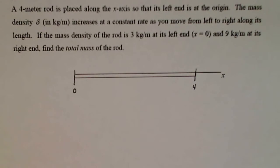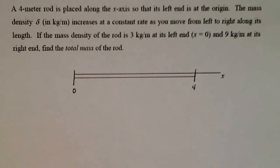So we have a four meter rod placed along the x axis so that its left end is at the origin. The mass density delta in kilograms per meter increases at a constant rate as you move from left to right along its length.